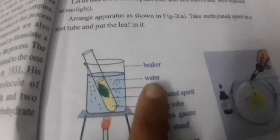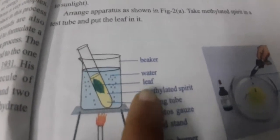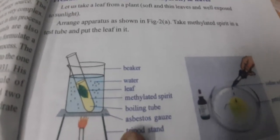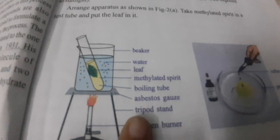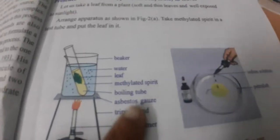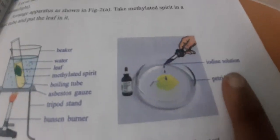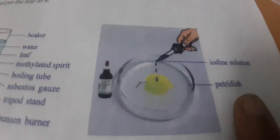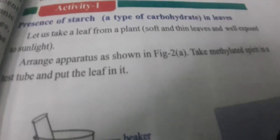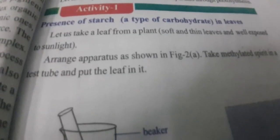Here you can see a beaker with water, a leaf, and methylated spirit, along with a boiling tube, water bath, gauze, tripod stand, and Bunsen burner. These are the materials required for doing this activity.